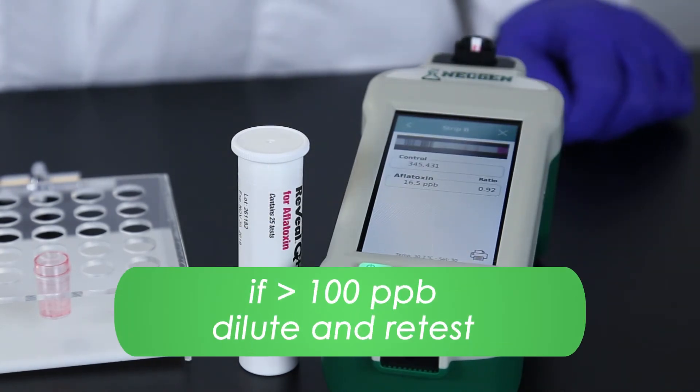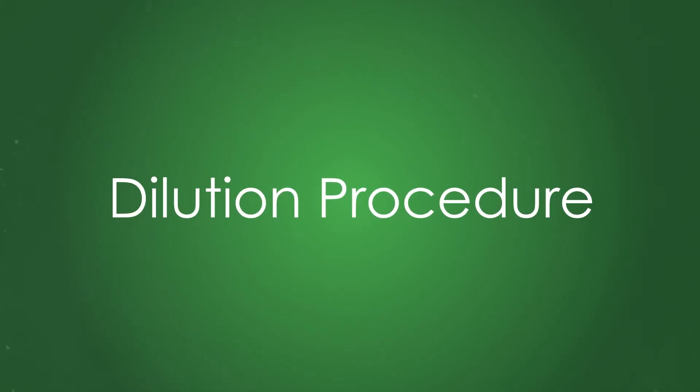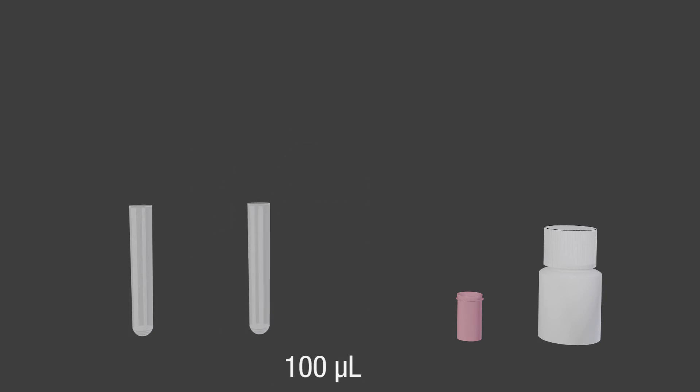For samples greater than 100 ppb, you will need to dilute and retest. Add 100 microliters of sample filtrate to a sample collection tube. Add 100 microliters of 65% ethanol and mix well. Transfer 100 microliters of the sample diluent to a red dilution cup. Add 500 microliters of sample diluent and mix well.